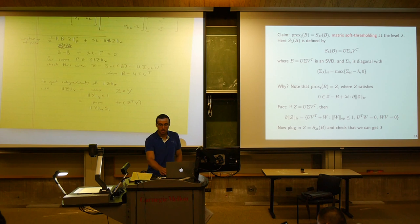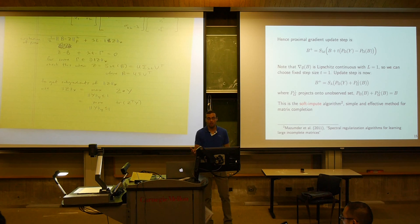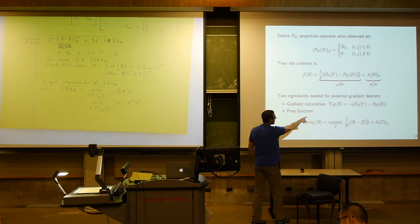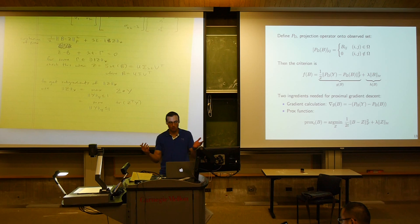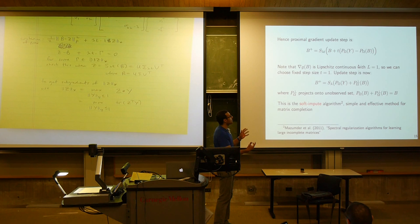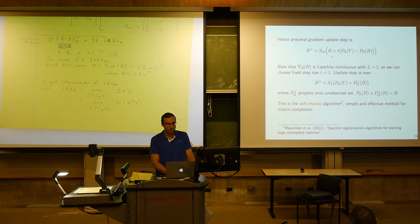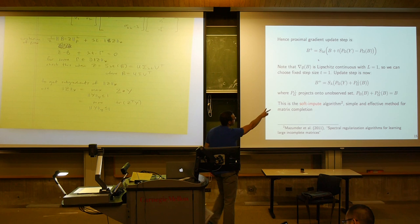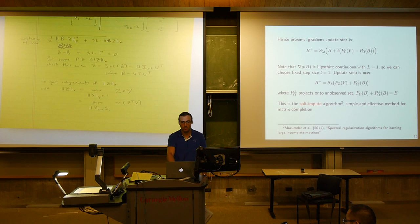Now that we have the prox operator, we can put together the algorithm: take a step in the direction of the negative gradient of g, which was P_omega(Y) minus P_omega(B), so we compute B plus t times that direction, and then soft threshold it. That's proximal gradient descent for matrix completion. This means taking the SVD of the input, killing all singular values smaller than lambda t, subtracting lambda t from the remaining singular values, and making a new matrix.